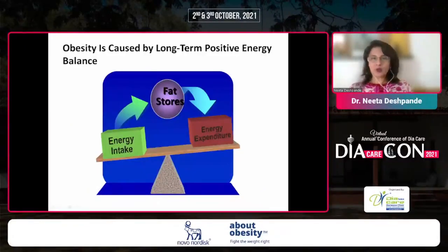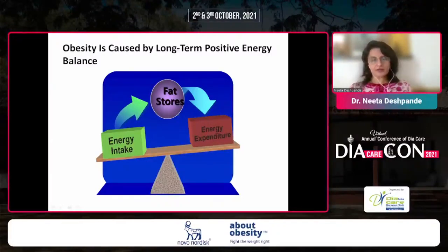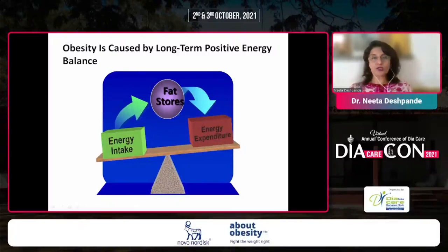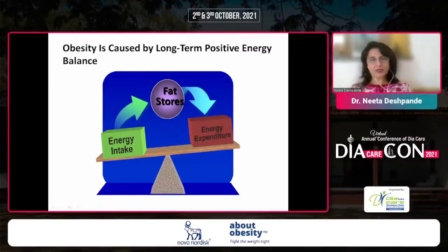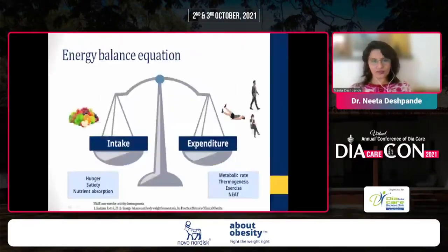Traditionally, we understand obesity as calories in, calories out — there is an imbalance and hence you have fat storage. But is it really as simple as this? Obviously not. Now we know a lot more than just calories in and calories out. Let's talk about this in detail and then go to the other factors that complicate the issue.